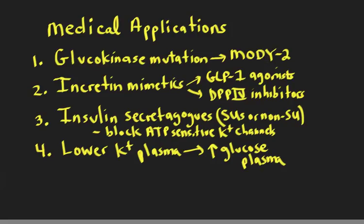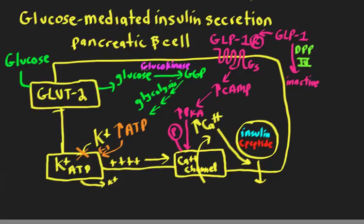If we had a glucokinase defect, we would not have a complete absence of the enzyme, but maybe a reduced Vmax or reduced function, meaning more glucose would be required to trigger insulin secretion. So we'd find an elevated plasma glucose — which is why these patients are diagnosed with diabetes — but if you measured their insulin and C-peptide levels, they'd actually be reduced. Not zero, as you might see after complete type 1 autoimmune destruction, but somewhat reduced. That would be the pattern seen in MODY type 2.